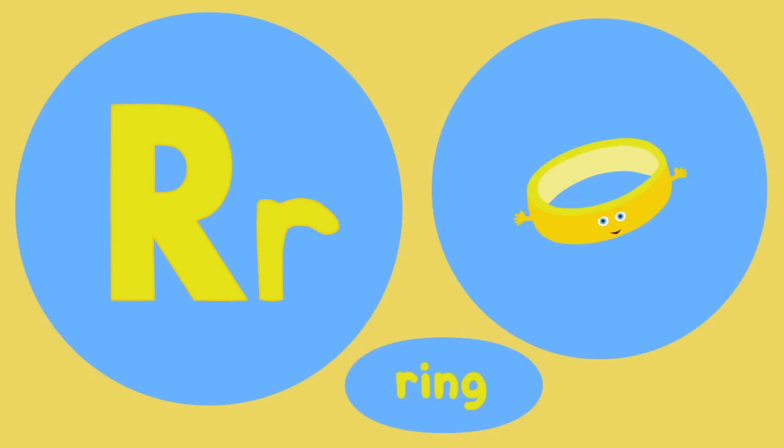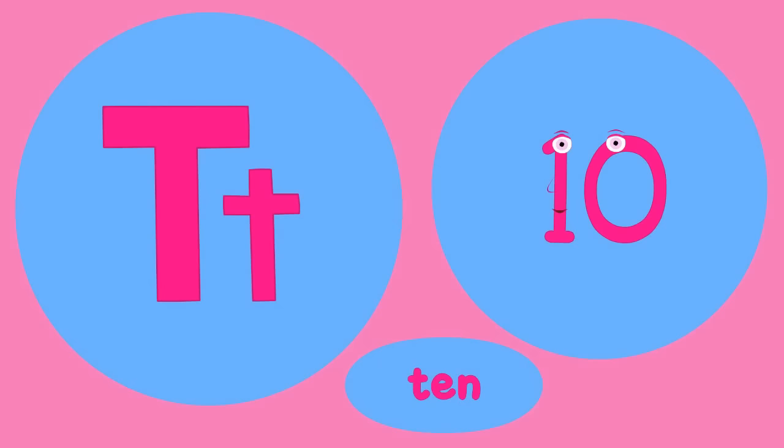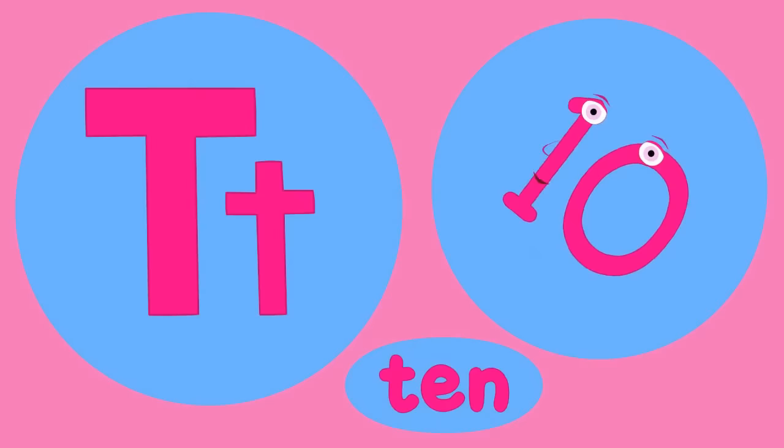Q is for question, q-q-question. R is for ring, r-r-ring. S is for sun, s-s-sun.